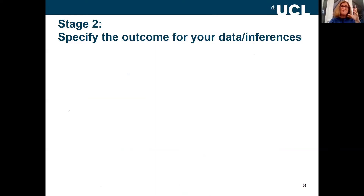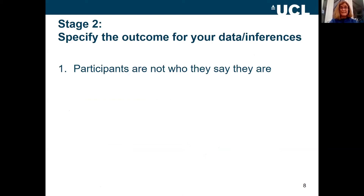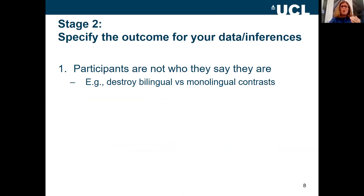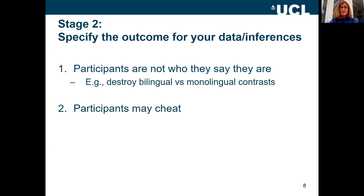Once you've thought about your concerns, try and be really specific about what the outcome will be for your data or the inferences you want to generate. Think about the worst case scenario. If I'm comparing monolinguals to bilinguals and they're not who they say they are, then my experimental contrast is completely destroyed. If they're cheating, we might be looking at unusable or unpublishable data.